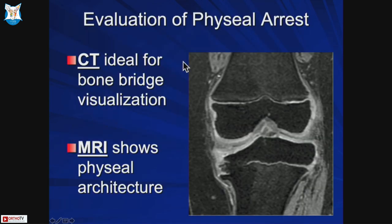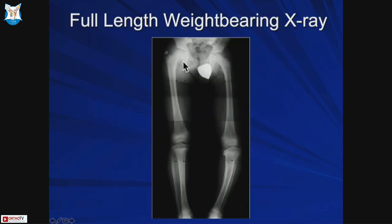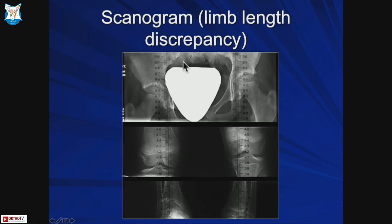You need advanced imaging to assess how much physis is affected. CT is ideal for bone bridge visualization, while MRI shows the architecture of the physis. A gradient echo with fat saturation shows the physeal map used to create the mapping diagrams. We also obtain full-length weight-bearing x-rays to evaluate limb length and deformity.